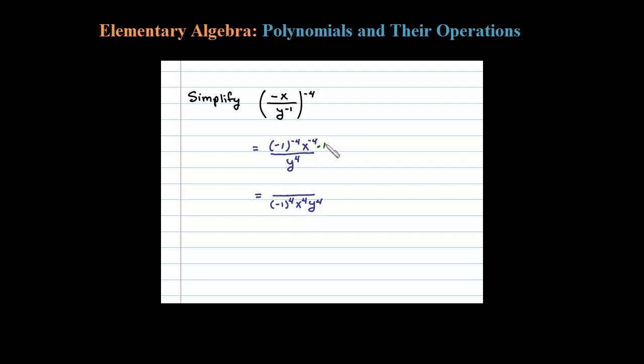Okay, and then finally, simplifying, cleaning it up a little bit. Negative 1 to the fourth power is negative 1 times itself 4 times—that's positive 1.